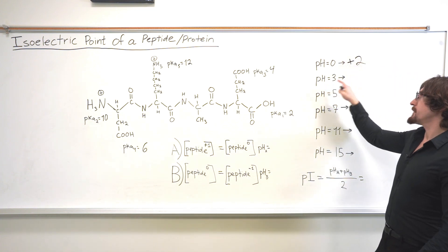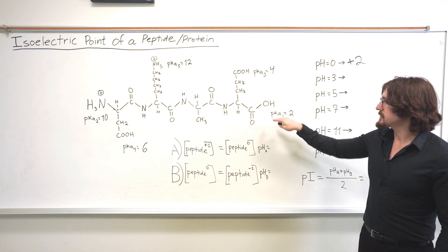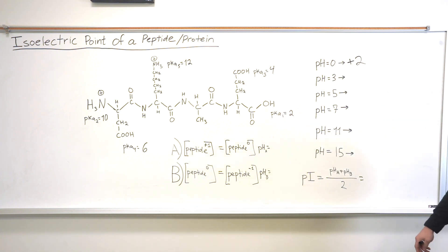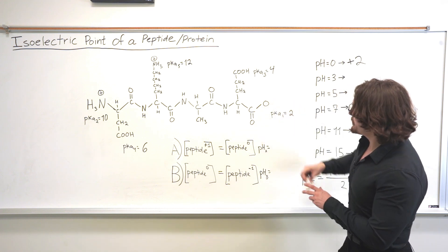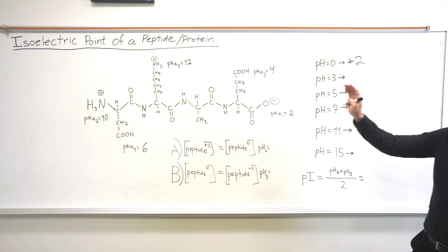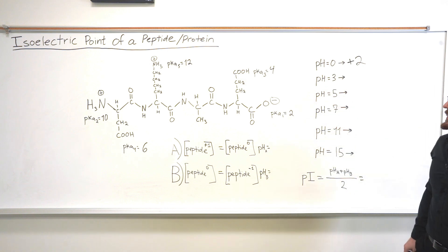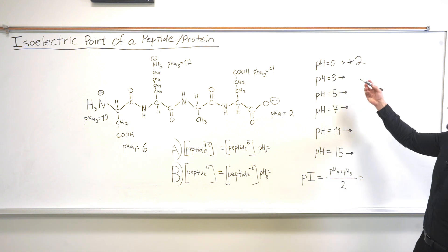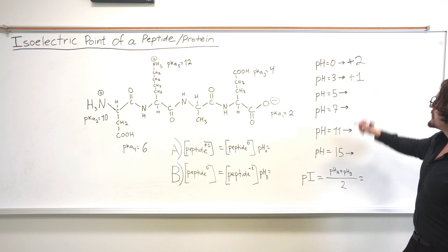Now we increase the pH just above the pKa of the group with the smallest pKa value, which is the carboxyl terminal group. At pH 3, this group is going to be deprotonated and negatively charged. All the other groups stay as they are because their pKas are still higher than pH 3. So now we have two positively charged groups and one negatively charged group — that's a net charge of +1.